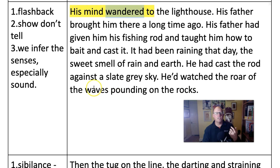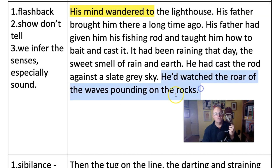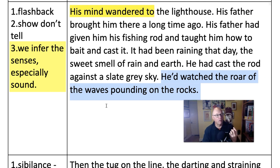'He had cast the rod against a slate grey sky. He'd watched the roar of the waves pounding on the rocks.' So now the mood is threatening, uncomfortable - just as the description of the people on the bus were also uncomfortable. If we look at this final line, we've got that trick with the senses again. He doesn't tell us that the character could hear the waves or that they were loud. Instead, we get a sense of the sound from this violent, vivid verb: 'pounding.'